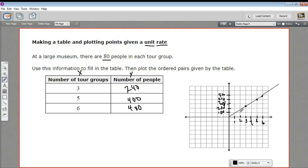And here, 160, and so forth. And I could look on further and see how many people there would be if I had 10 or 15 or 20 tour groups coming. So this line describes this relationship of numbers of tour groups to numbers of people. So that is how to make a table and plot some points given a unit rate.